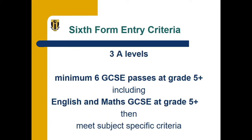Looking at our entry requirements, any student that enters our Sixth Form must have English and Maths GCSE at at least a Grade 5. The majority of our students study 3 A Levels, and for this you have to have a minimum of 6 GCSE passes at Grade 5 or above — the 6 includes your English and Maths — and in addition, for the subjects you choose, you must also meet their specific entry requirements.